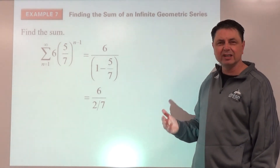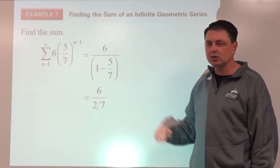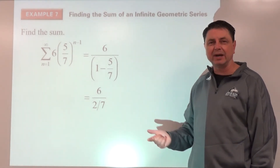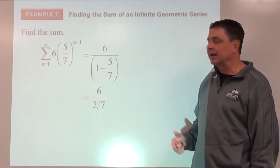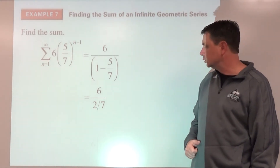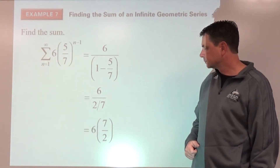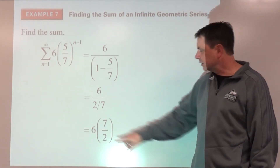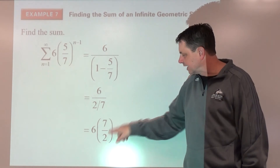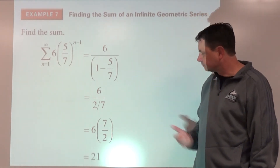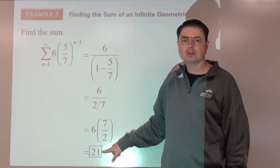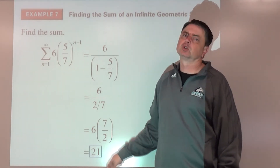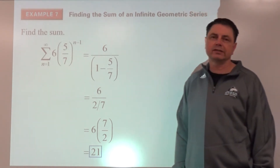Instead of dividing by two-sevenths, multiply by the reciprocal: 6 times 7 over 2 equals 42 divided by 2, which is 21. The sum is 21.